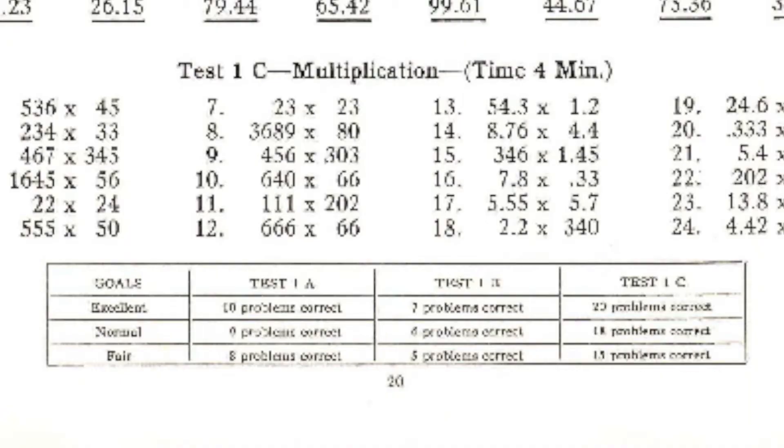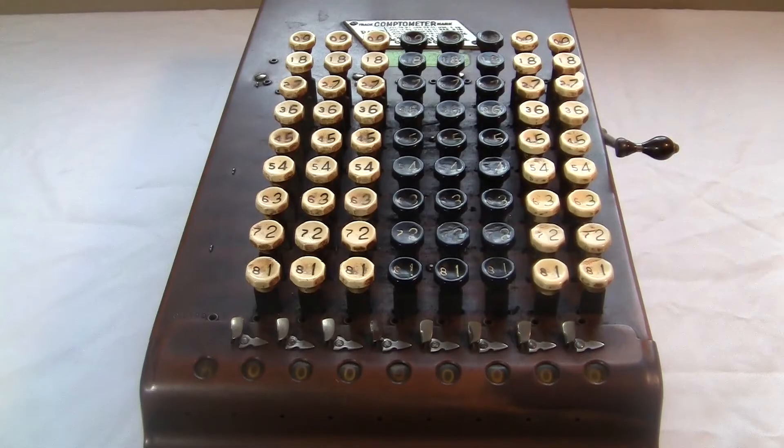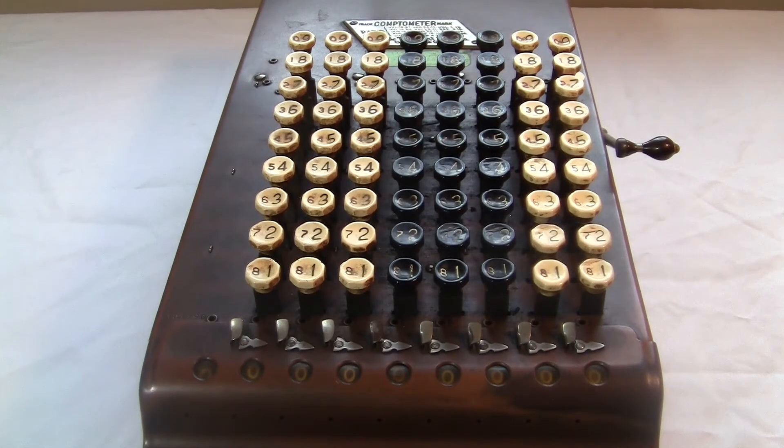That book has some practice tests in it. I took the first multiplication test to see how I do. There's 24 multiplications that you're supposed to do in four minutes. I got 16 right, which just barely puts me in the fair category. I'll put a PDF of this file down in the description so you can check it out.